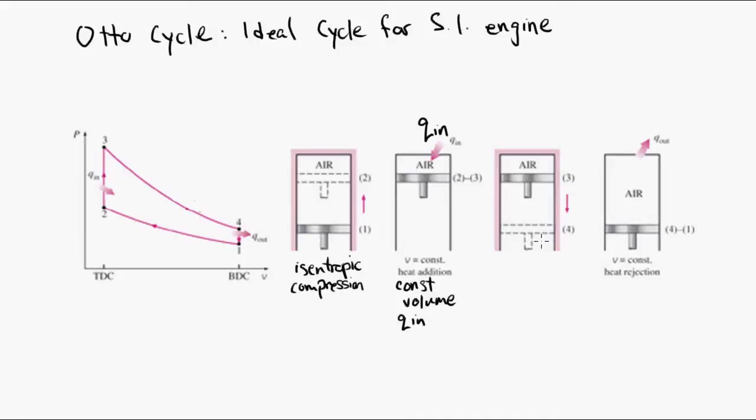From three to four, we have an expansion. In the ideal cycle, it's isentropic expansion as the piston moves down to BDC. So again, isentropic means no irreversibilities and no heat transfer. And then the fourth stage is heat removal at a constant volume. And you can see this ideal cycle on the left on the PV diagram.